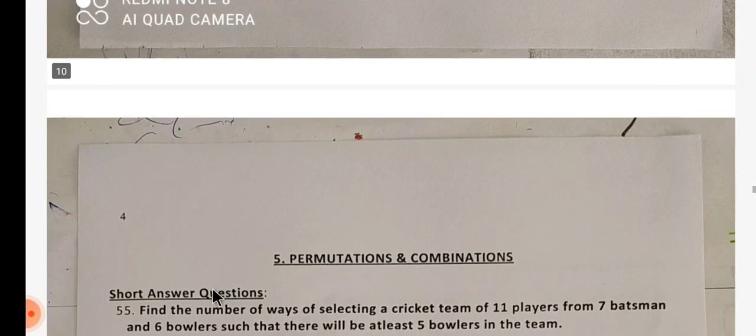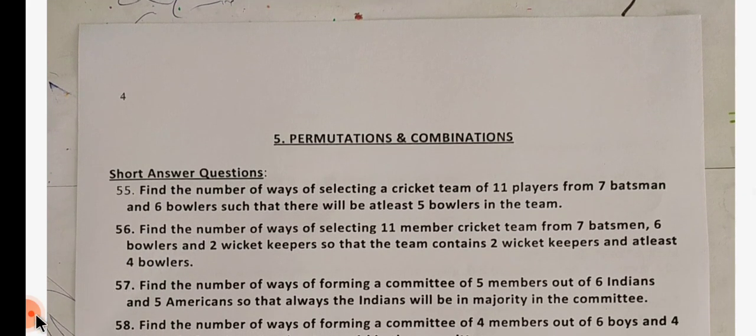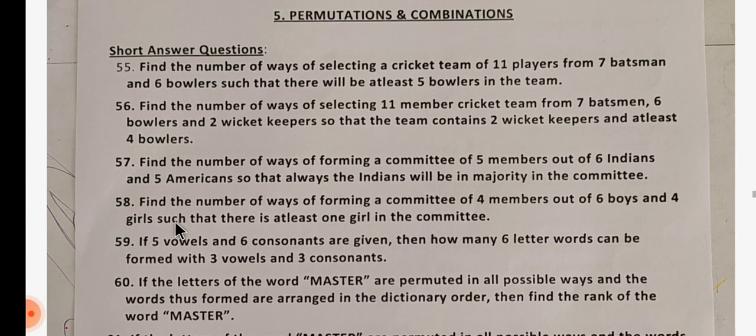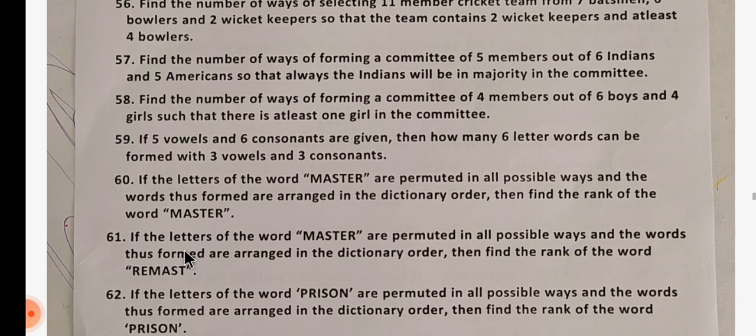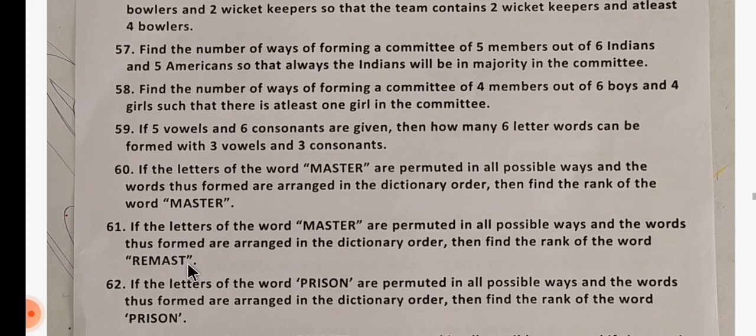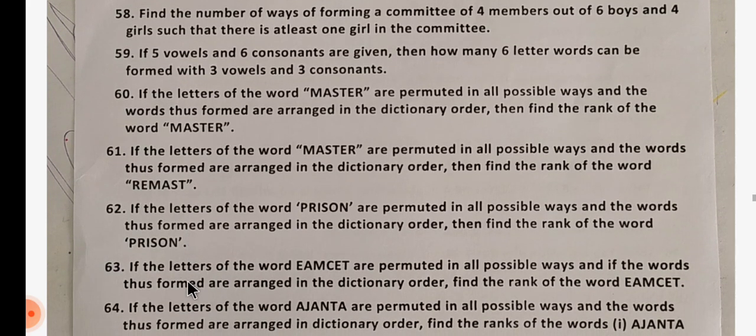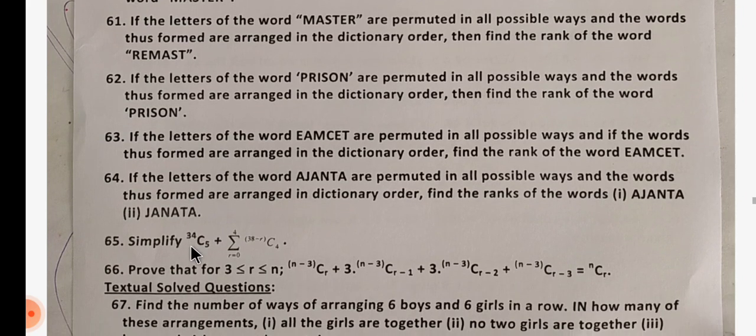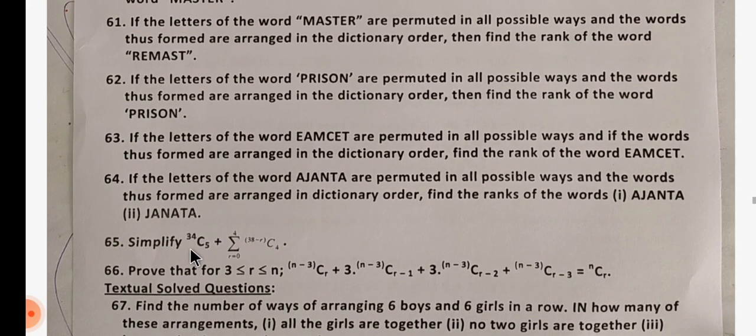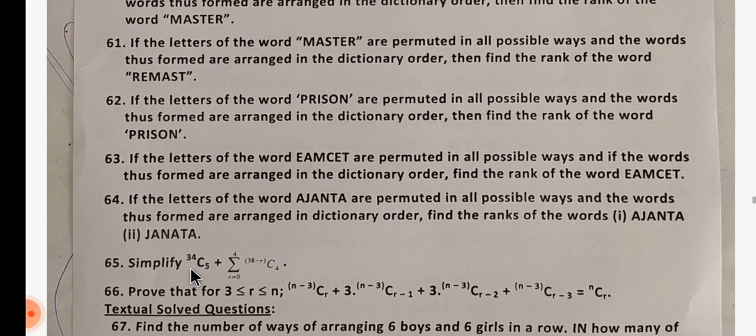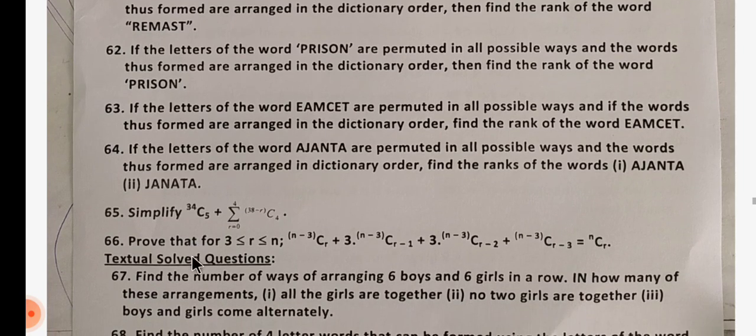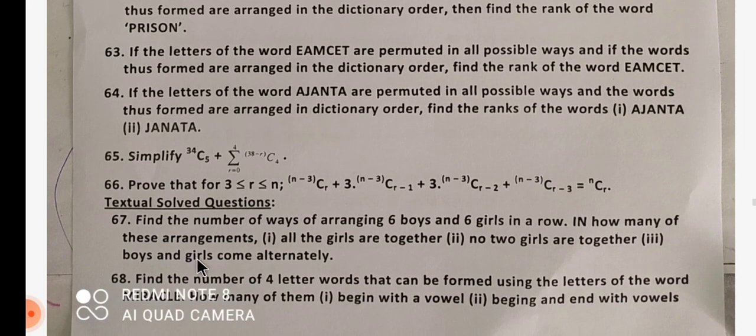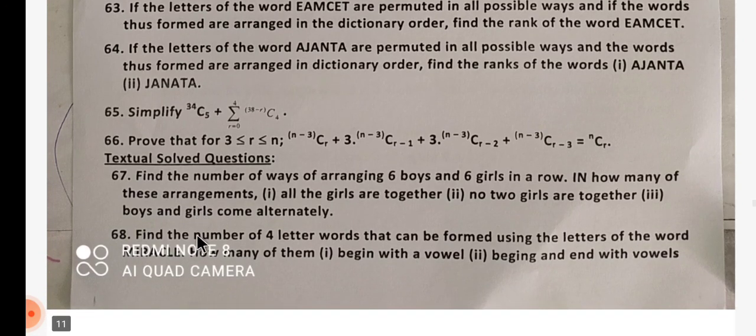Next lesson is Permutations and Combinations. Permutations and Combinations should be practiced thoroughly. Of course, you will have questions 55 to 52, and you have 55 to 62. This Permutations and Combinations will be written in your quarter exam and first exam. Because you have questions 55 to 60, 64, 65, 60. The questions are here. So if you practice this model, you will get good marks. If you do hard work, you will get full marks.